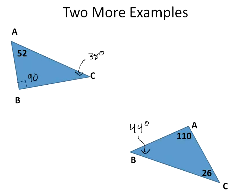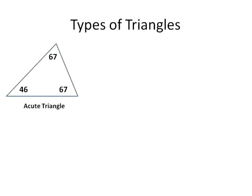All you're doing is knowing that there's 180 degrees inside of a triangle, so all three corners need to add up to give you 180 degrees.